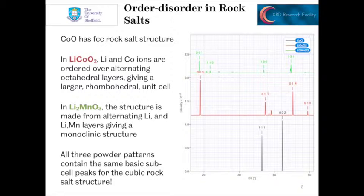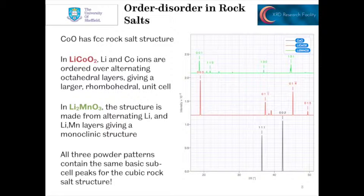In lithium cobalt oxide, lithium and cobalt cations occupy layers of alternate octahedral sites within the oxide array. This cation ordering gives a larger unit cell which is rhombohedral. We get extra lines appearing in the diffraction pattern, as you can see in red. The lines corresponding to the rock salt subcell are still present, but appear at higher 2θ and lower D spacing, since there's a contraction in the interatomic distances. The HKL indices are also different because the structure and unit cell are different.